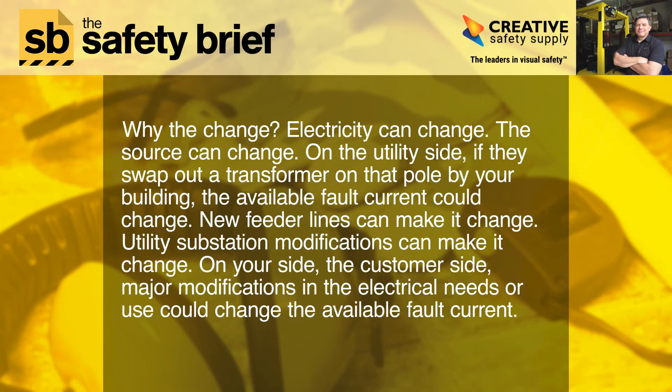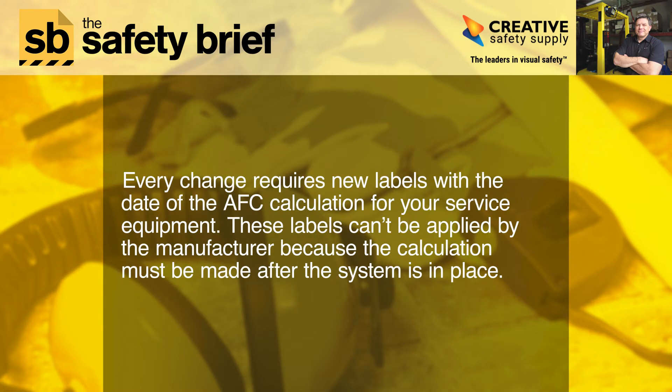Why the change? Electricity can change — the source can change. On the utility side, if they swap out a transformer on that pole by your building, the available fault current could change. New feeder lines can make it change. Utility substation modifications can make it change. On your side, the customer's side, major modifications in electrical needs or use could also change the available fault current.